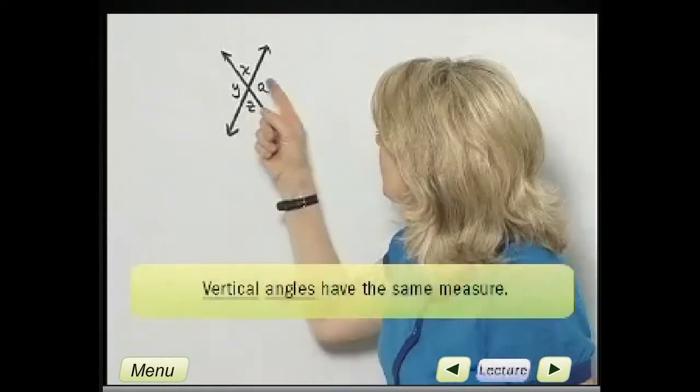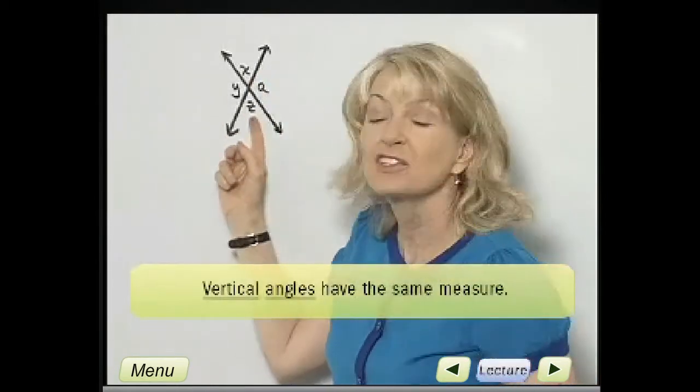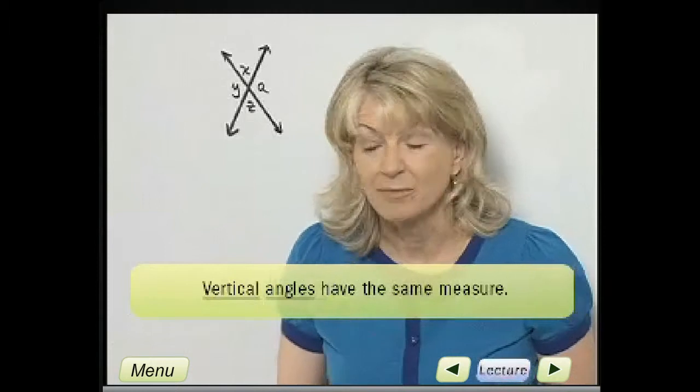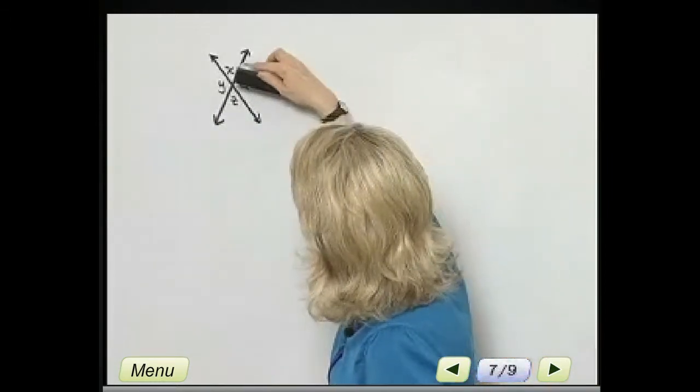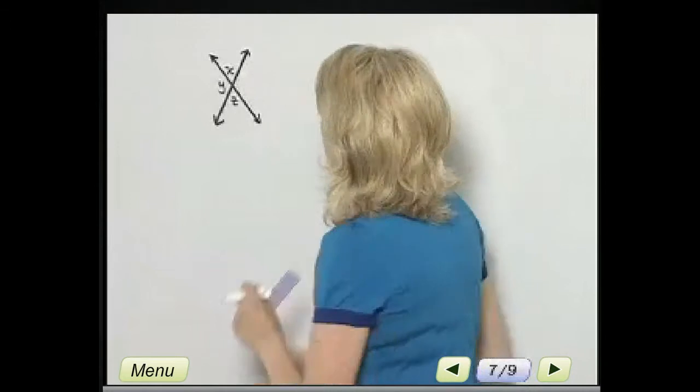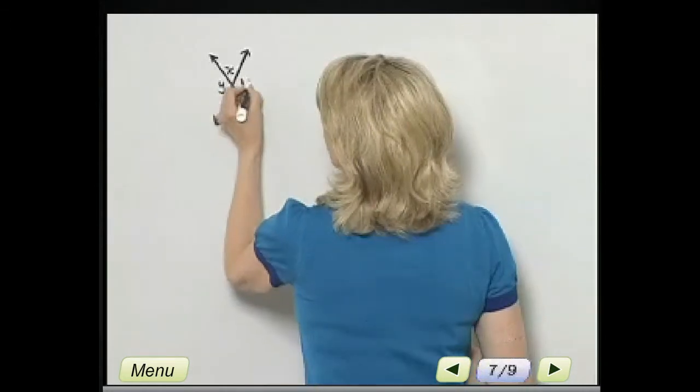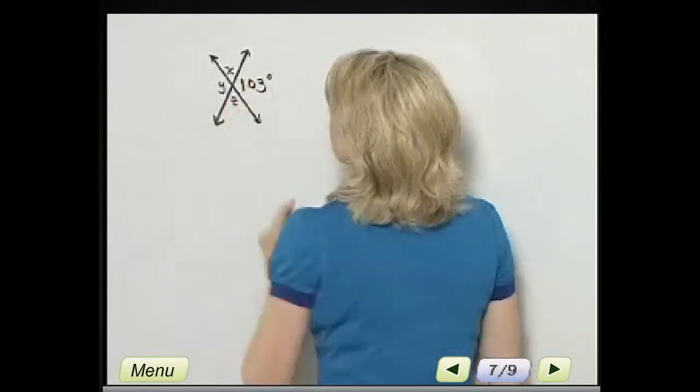What's so interesting about vertical angles is that they have the same measure. So the measure of angle X and the measure of angle Z, those are the same. The measure of angle A and the measure of angle Y, those are the same. So let's suppose I know the measure of angle A. Let's suppose I know angle A measures 103 degrees. Now, notice I chose something that was obtuse, greater than 90, less than 180, so that this figure looks approximately correct.